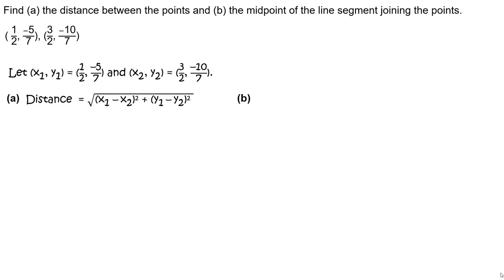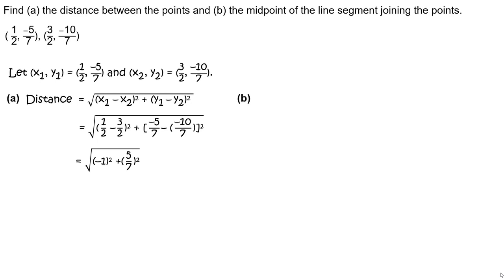Part a. Write the formula for the distance between two points: distance equals the square root of the quantity x sub 1 minus x sub 2 squared plus the quantity y sub 1 minus y sub 2 squared. Substitute 1 half for x sub 1, 3 halves for x sub 2, negative 5 sevenths for y sub 1, and negative 10 sevenths for y sub 2. Simplify to get the square root of the quantity negative 1 squared plus 5 sevenths squared, which equals the square root of 1 plus 25 49ths, or the square root of 74 49ths, which is the square root of 74 divided by 7.